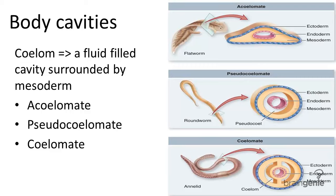Body cavities are the spaces formed in the early development of animal organisms. One very important cavity that forms early on in more complex animals is called a coelom. The coelom allows organisms to grow and move independently of the outer body layer. Let's look at the three different types of body cavity formation.